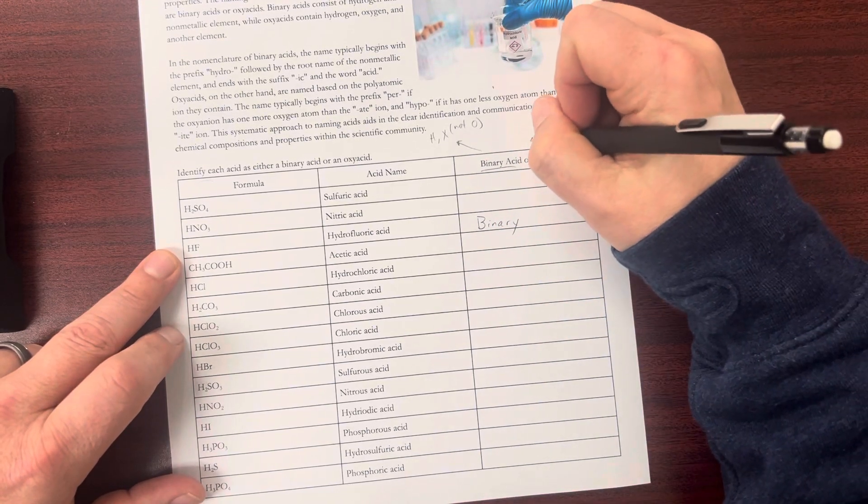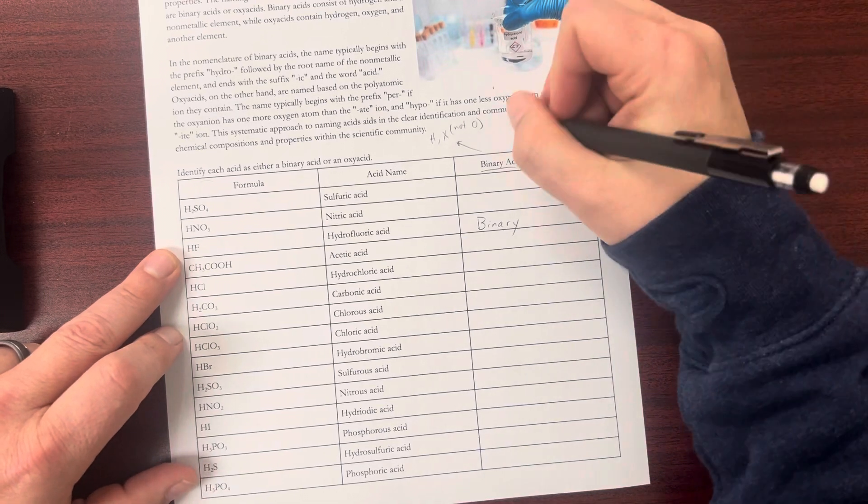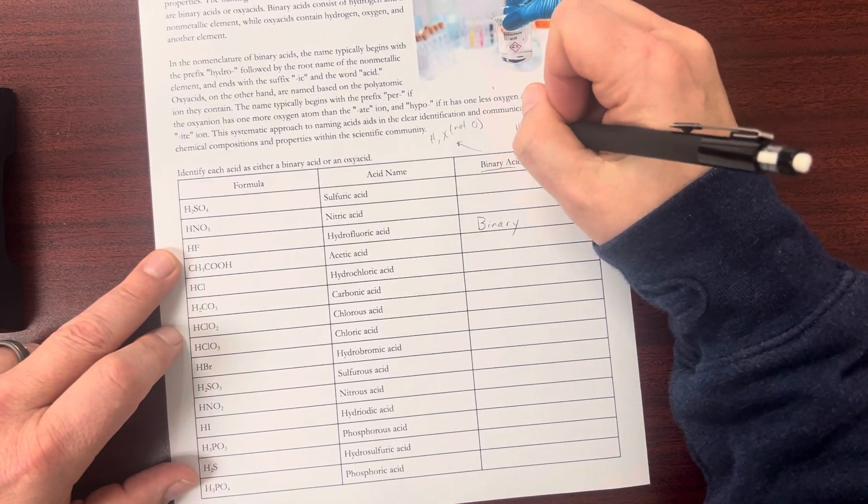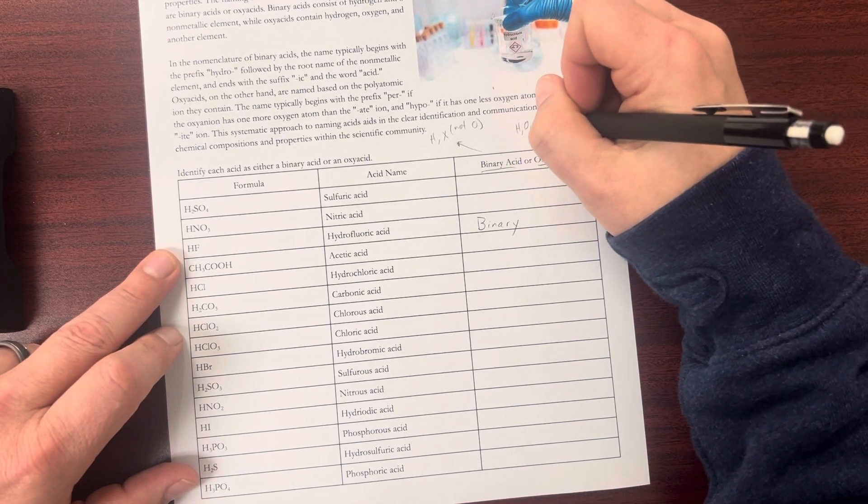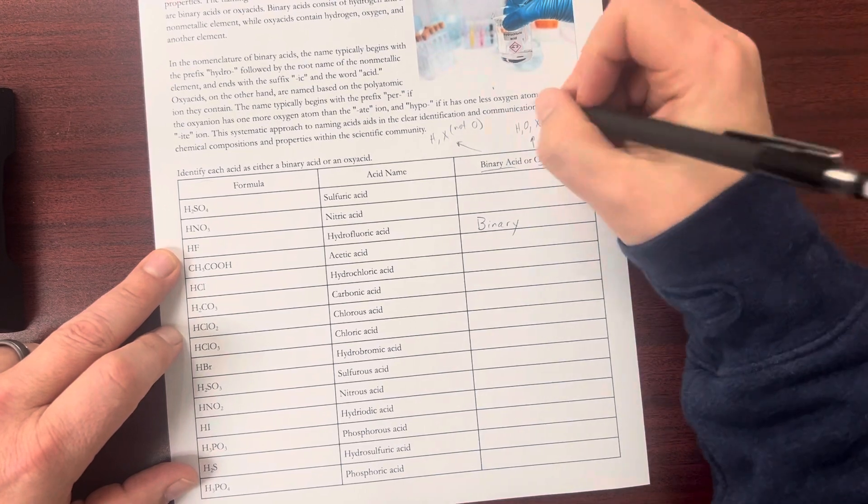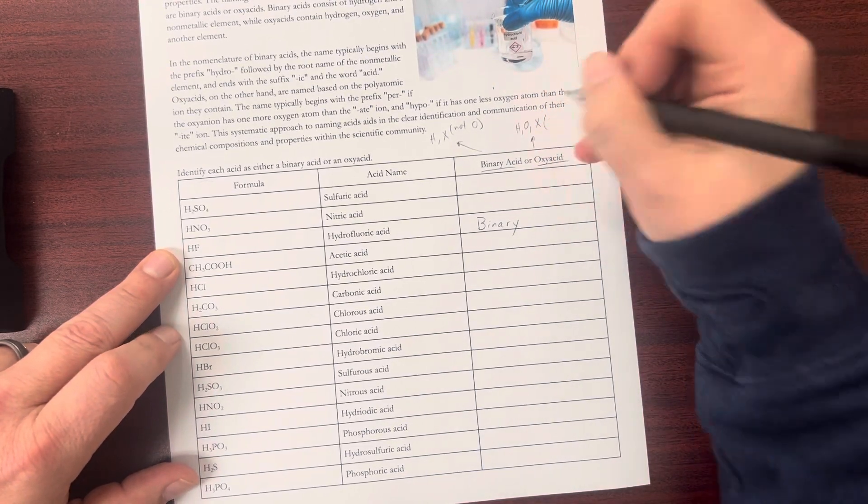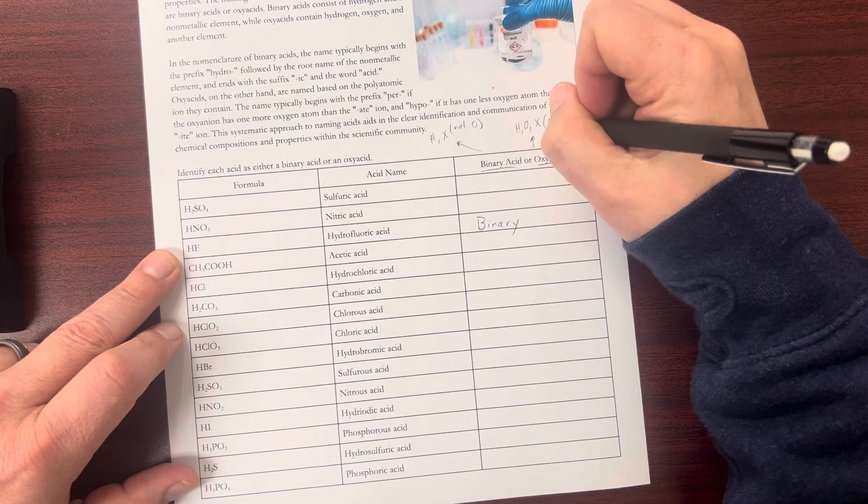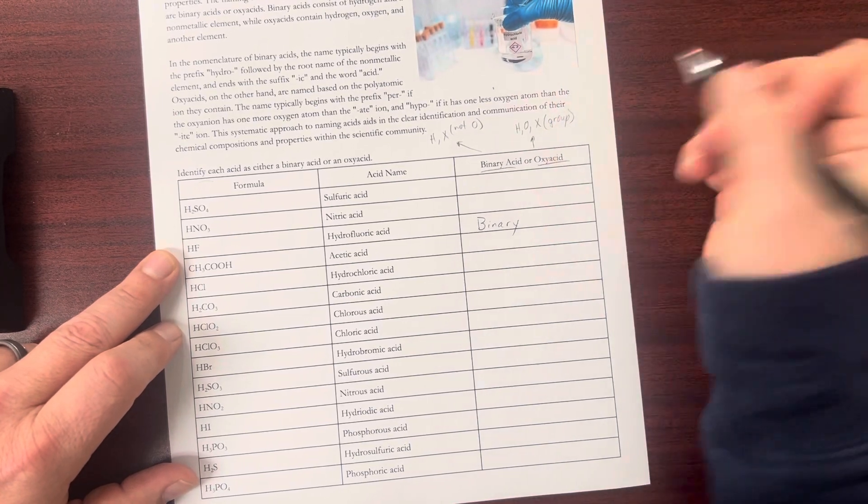Oxy acids are going to have three things. They're going to have hydrogen, oxygen, and something else. That could be an element or group, like a compound.